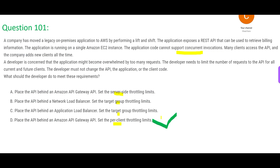So D would be my answer because we have to use API Gateway. If we have to use API Gateway, then by default B and C both become wrong. Now we have to choose between A and D. A is making use of server-side throttling. We have to manage the throttling per client, not at the server side, because we keep on adding API requests for different clients and the quota should be at the client level. If you do it at the server level, that means only 100 API requests total can be handled. But at the client level, you can set, say, 20 API requests for each client — specific to that client. That is something very important to understand.